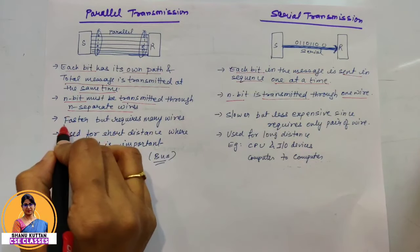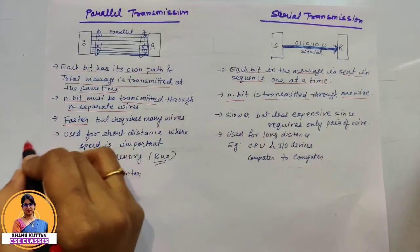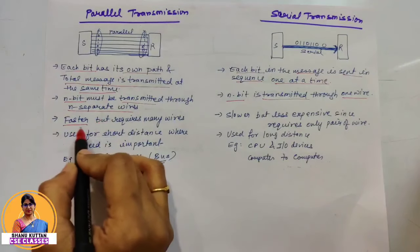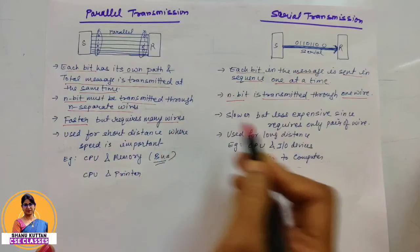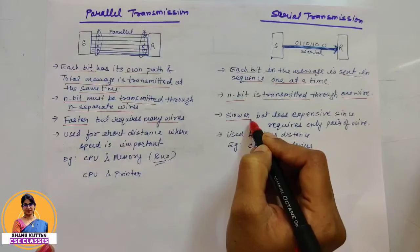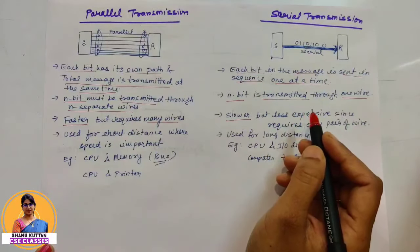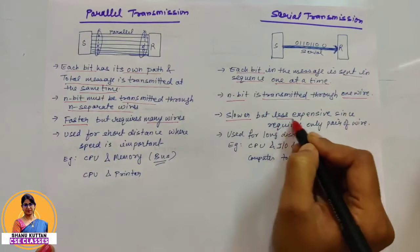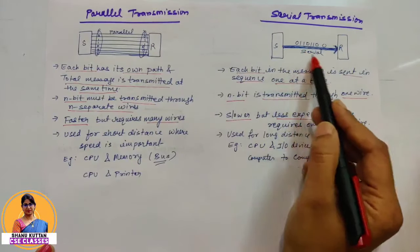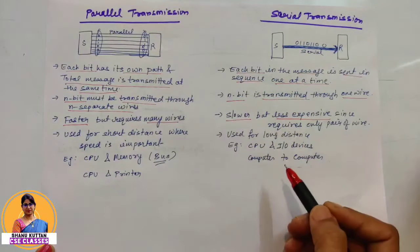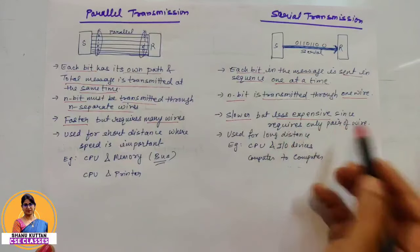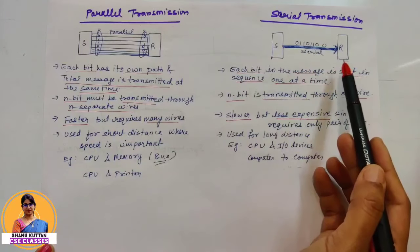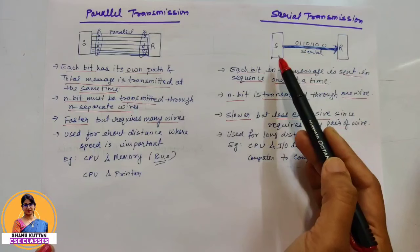Parallel transmission is faster because all bits are transmitted at the same time, but multiple wires are required, so it is faster but more expensive. In serial transmission, it is slower because bits are transmitted one by one in sequence. However, it is less expensive because all bits are transmitted over a single wire — only one pair of wires is needed to connect the sender and receiver.